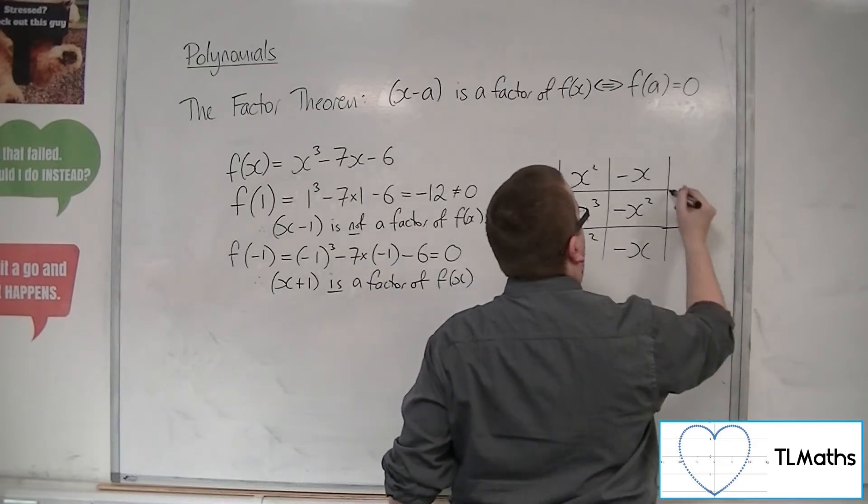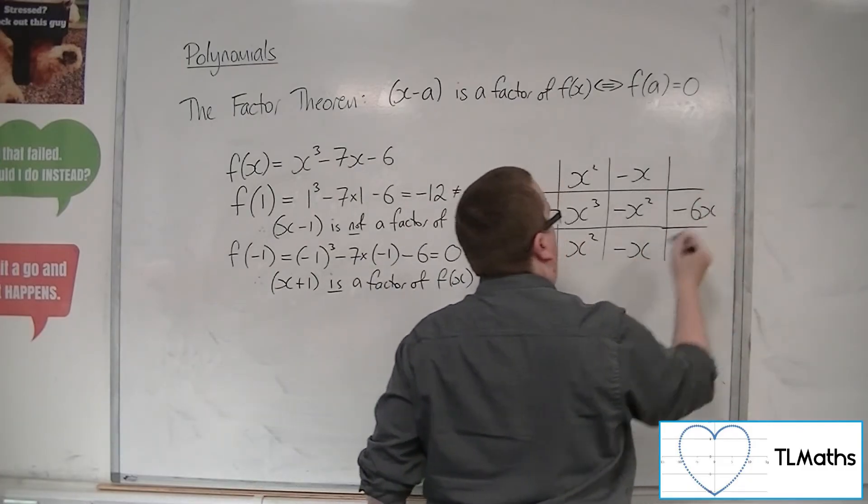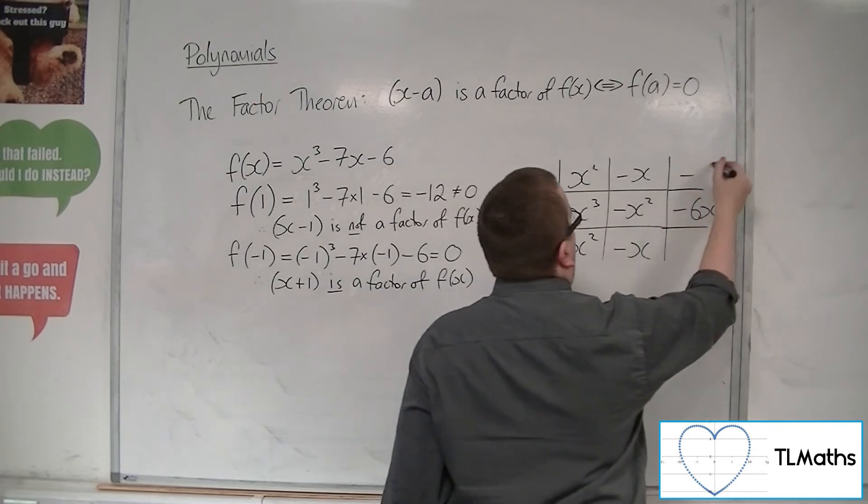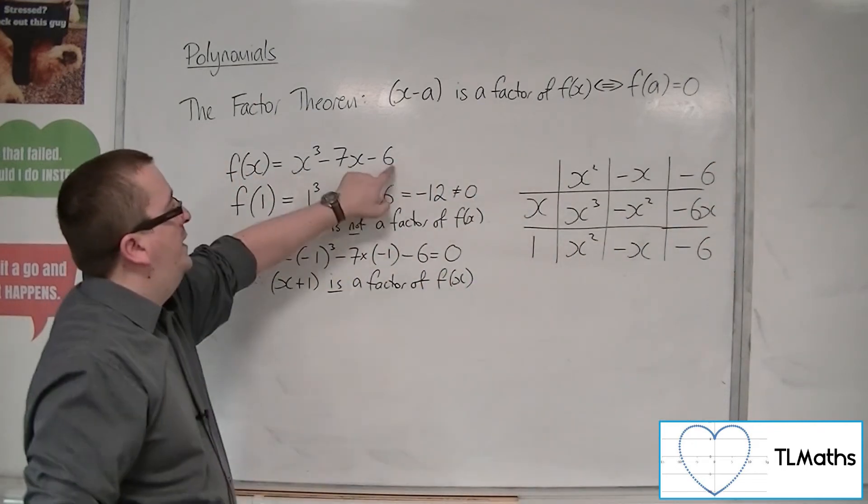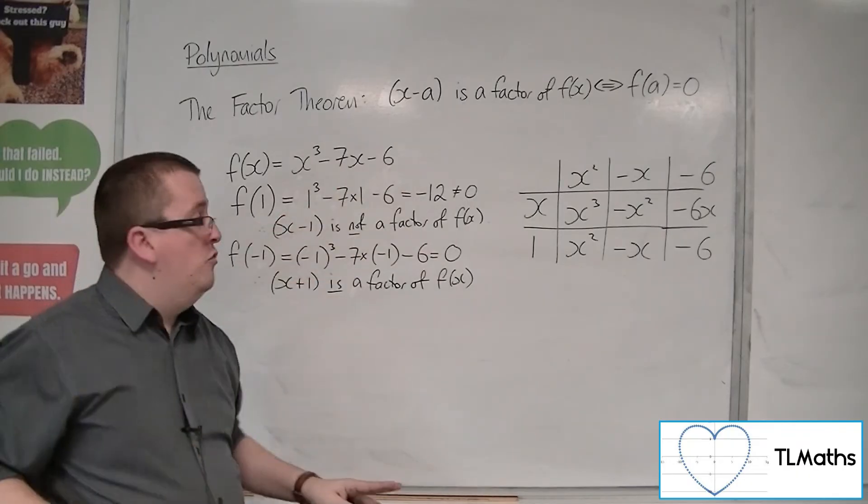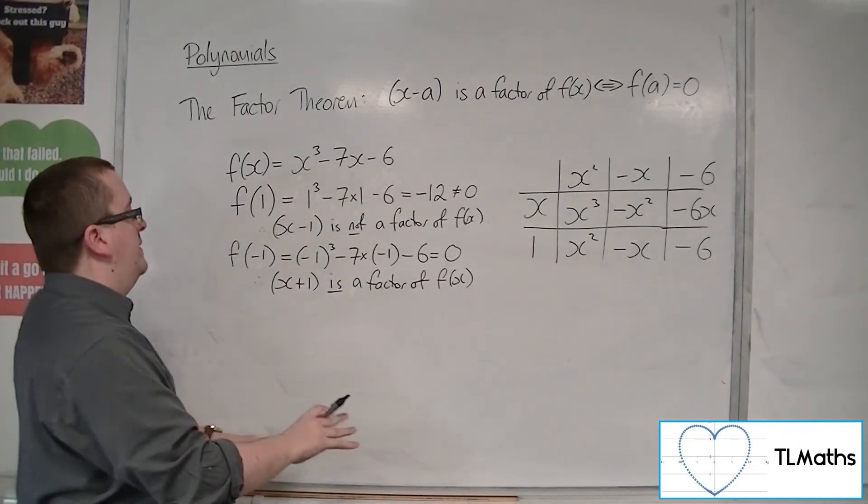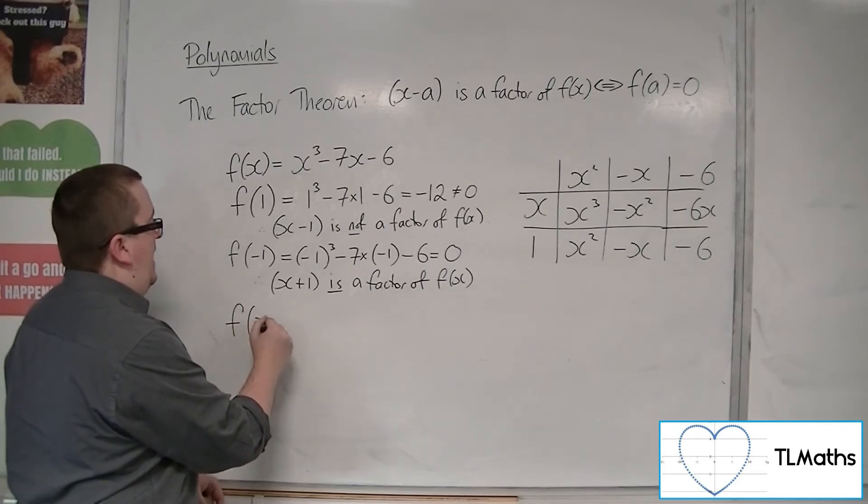I don't need minus x, I need minus 7x. So I'm going to have to subtract another 6x. x into that go minus 6. Minus 6 times 1 is minus 6. So minus 6 is precisely what I want, so there's no remainder as we expected.